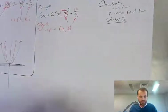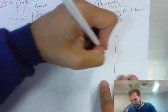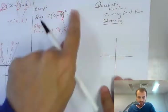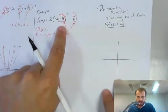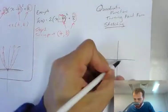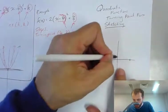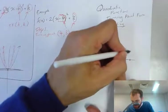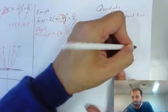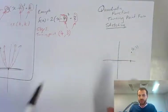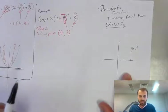So if I want to sketch that, x and a y-axis, and I know that the turning point of this particular function is going to be at x equals 4, 1, 2, 3, 4, and y equals 3, 1, 2, 3, up here. 4, 3. I know one point on this equation.